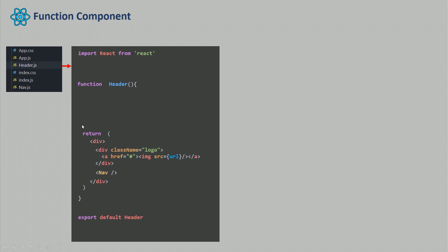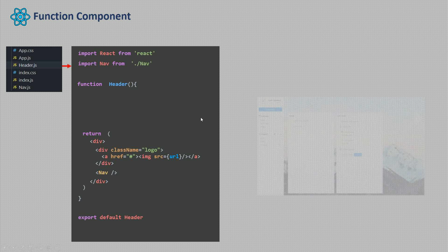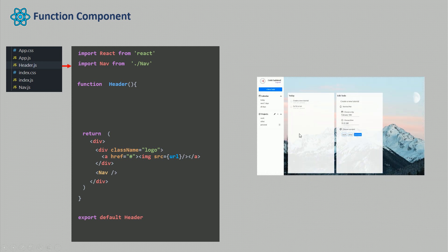Now I can go anywhere in my project and import the header. For example, the nav is also a JavaScript component file like our header. Before using it I need to import that nav from its location. Dot-slash means that the nav and the header are in the same directory. I don't have to put nav.js because by default it knows there is a JavaScript file. So when creating a React app, the first thing to think about is what components you're going to need.